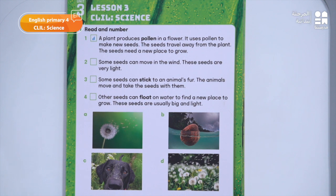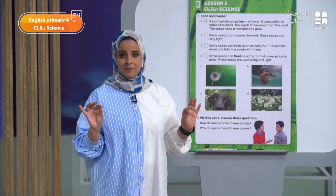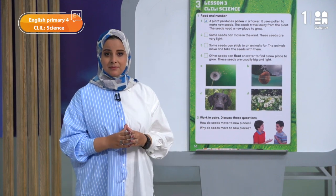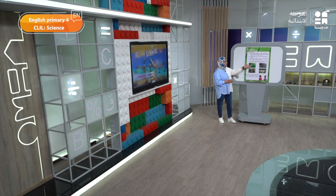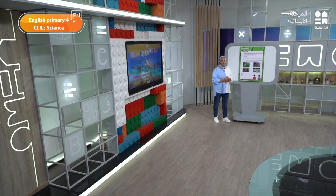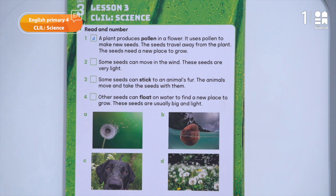Let's do number two together. Some seeds can move in the wind. These seeds are very light. Which picture is this? Very good. Picture A, because it shows that the seeds can move by the wind. Some seeds can stick to an animal's fur. The animals move and take the seeds with them. Which picture is this? Very good, C.